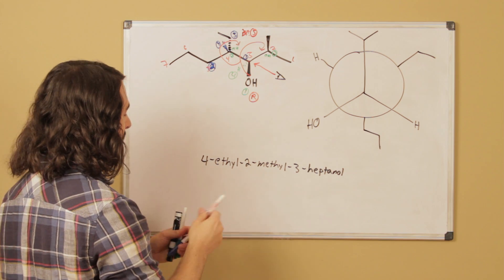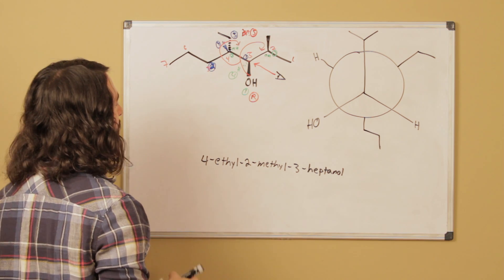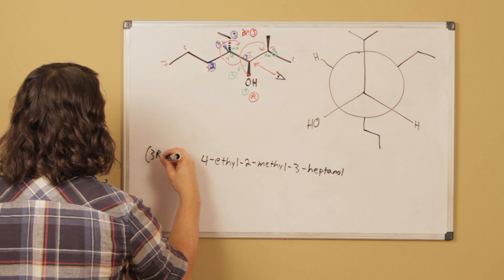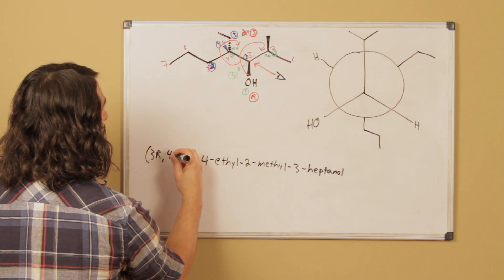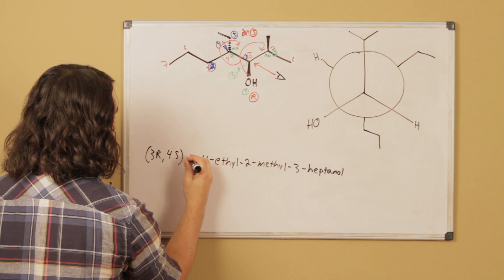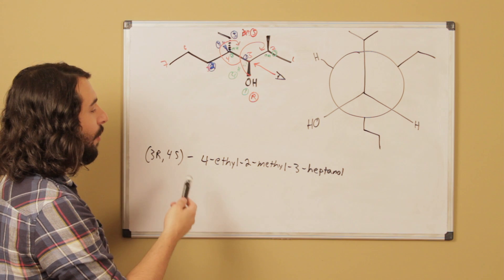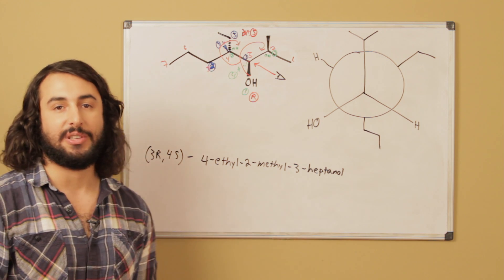And so now, the way we list the stereochemistry there, is we simply say we have 3R, 4S, and then the rest of the molecule. So the complete name will be 3R, 4S, 4-ethyl, 2-methyl, 3-heptanol.